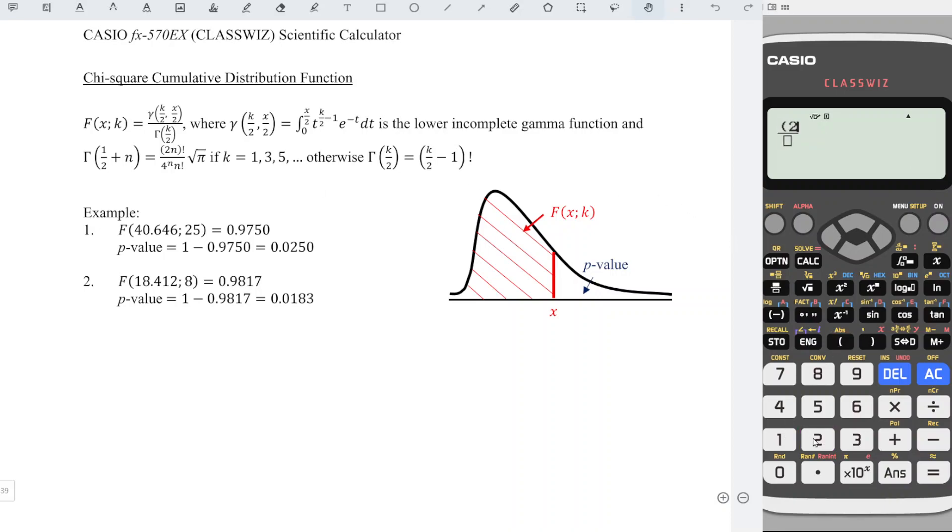Bracket, bracket, 4 to the power of n which is 12 for this case, and times 12 shift inverse to get factorial. Right, square root we have pi, so shift exponent to get pi. Press equal and we should obtain the value for the denominator.